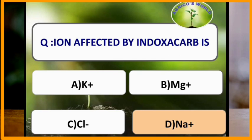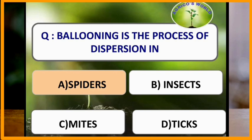Ballooning is a process of dispersion in spiders. Treetop symptom is due to nuclear polyhedrosis virus.